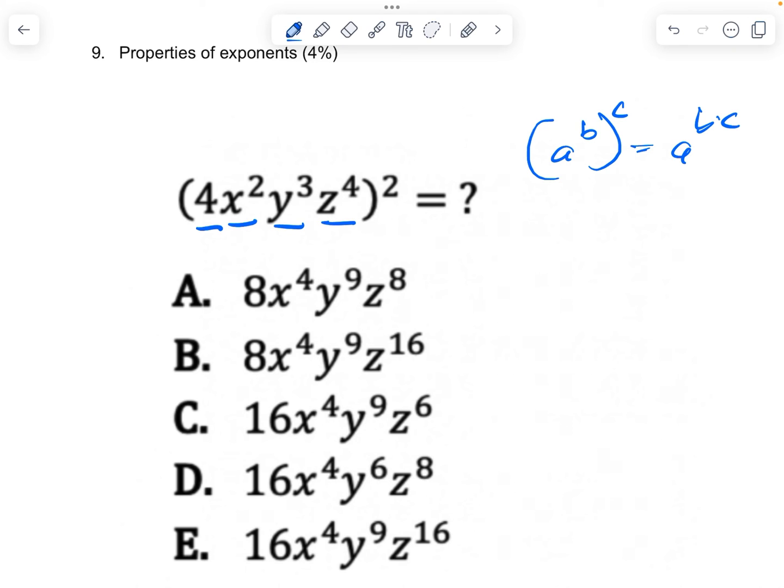It's really going to be 4 to the 2nd times x to the 2nd squared times y to the 3rd squared times z to the 4th squared. That gives you 16, x to the 2 times 2 which is 4, y to the 3 times 2 which is 6, and z to the 4 times 2 which is 8. Looks like this is the answer.